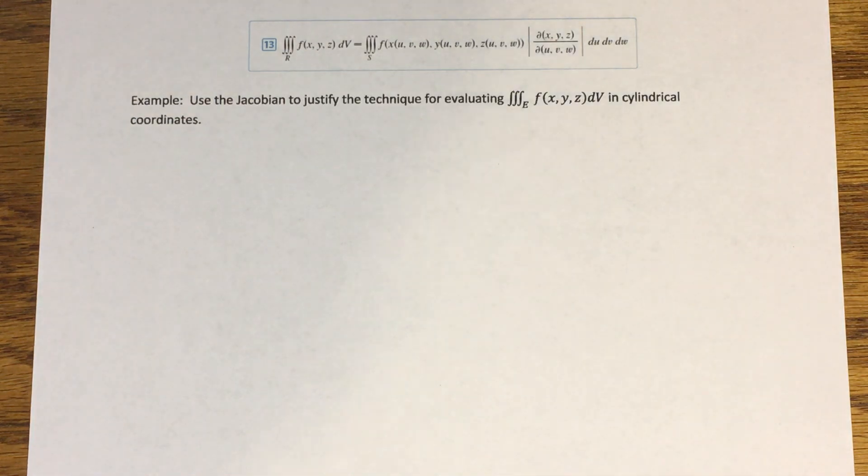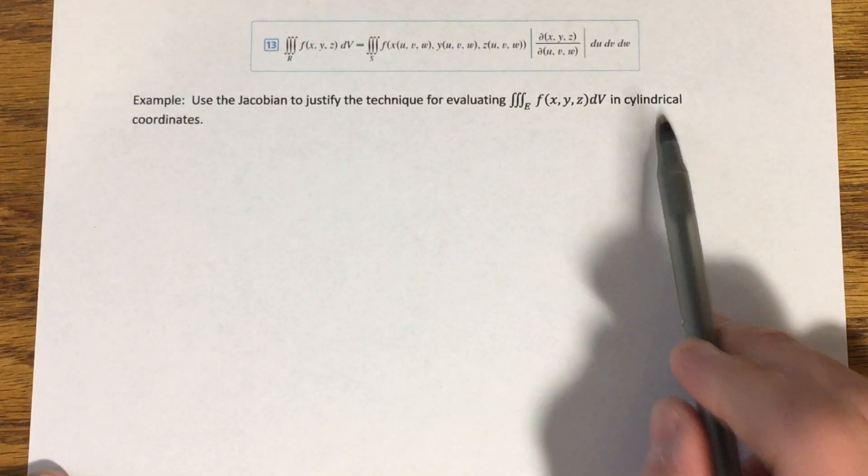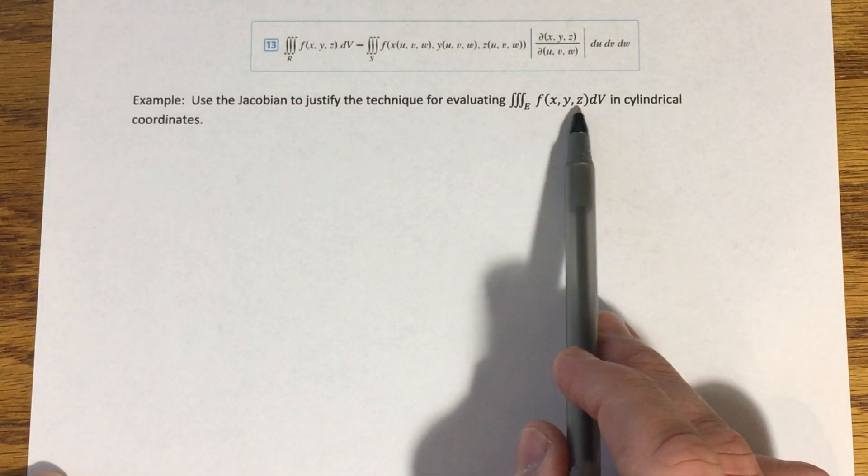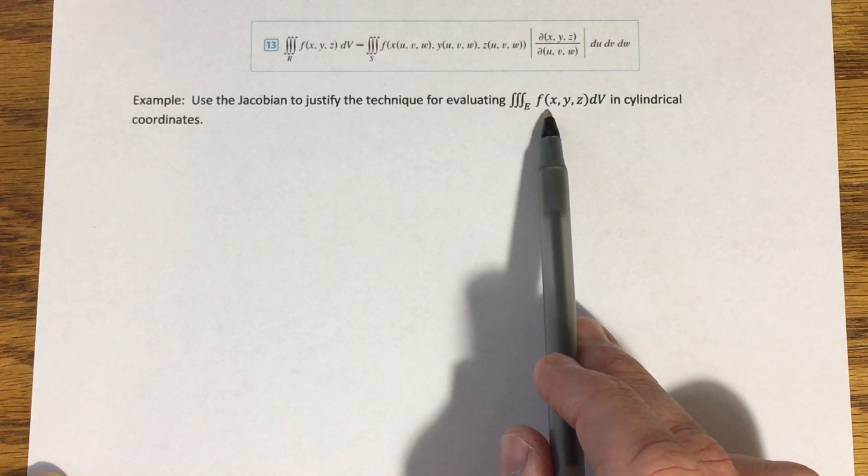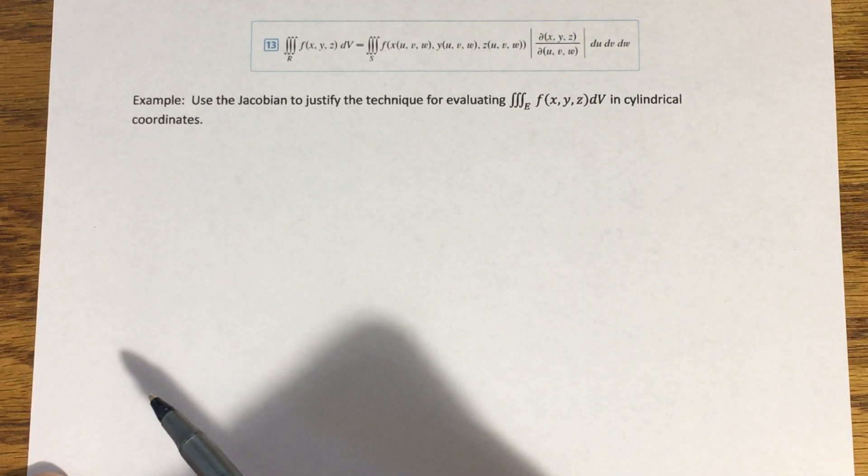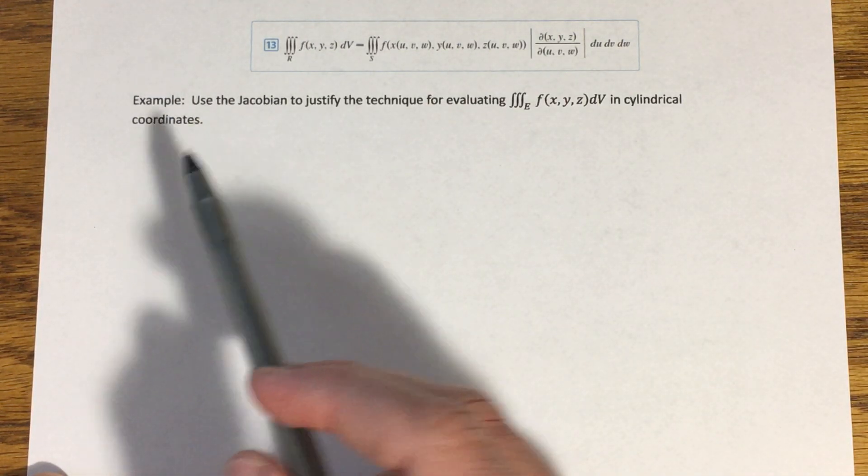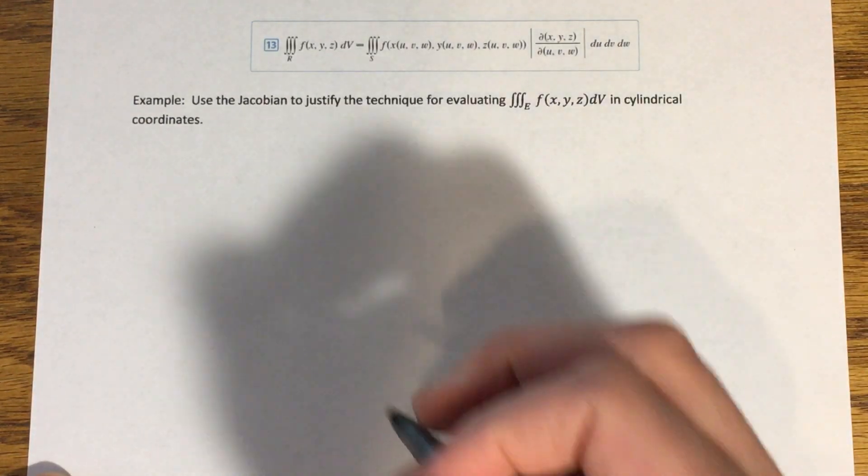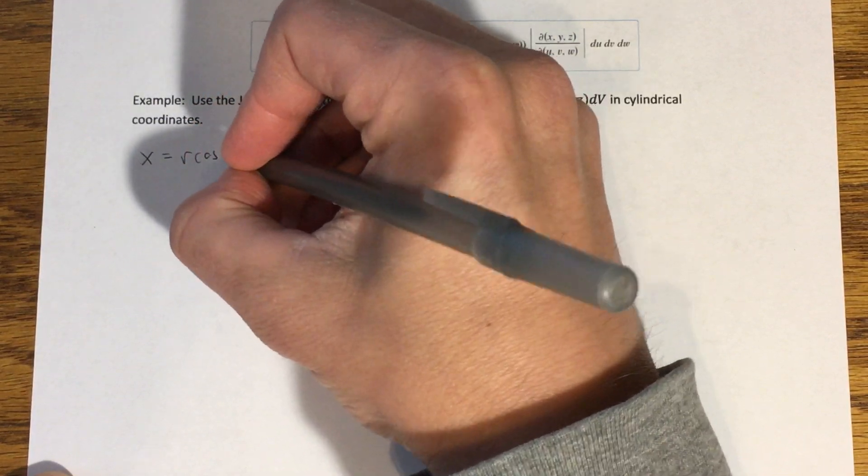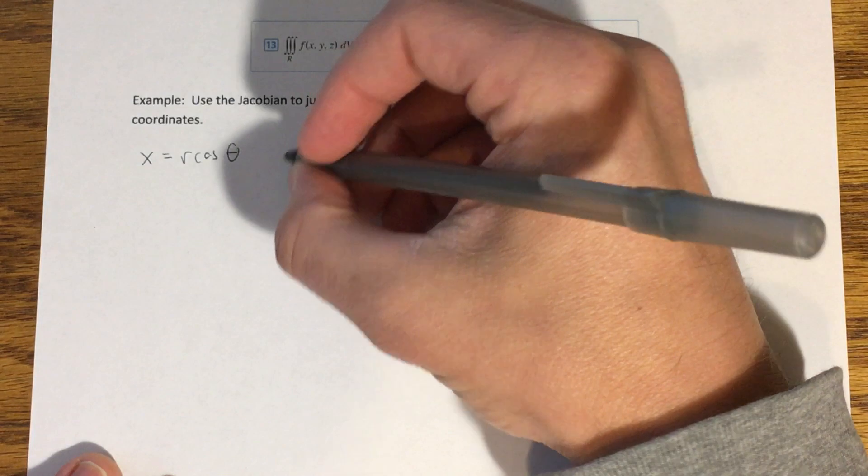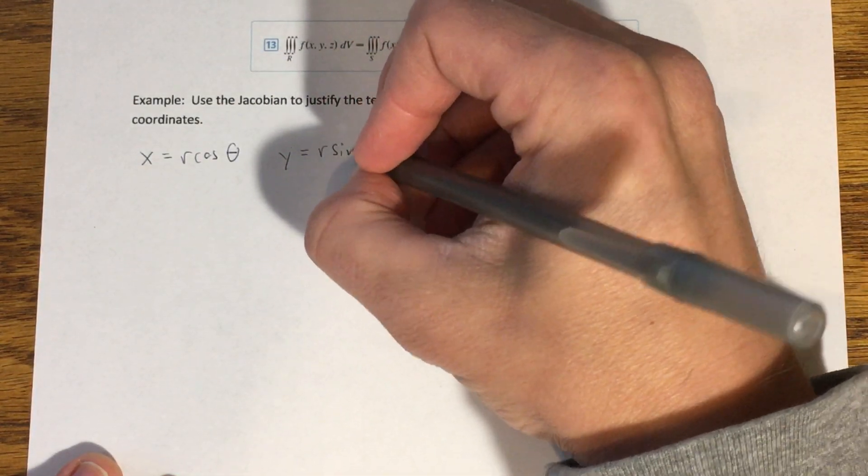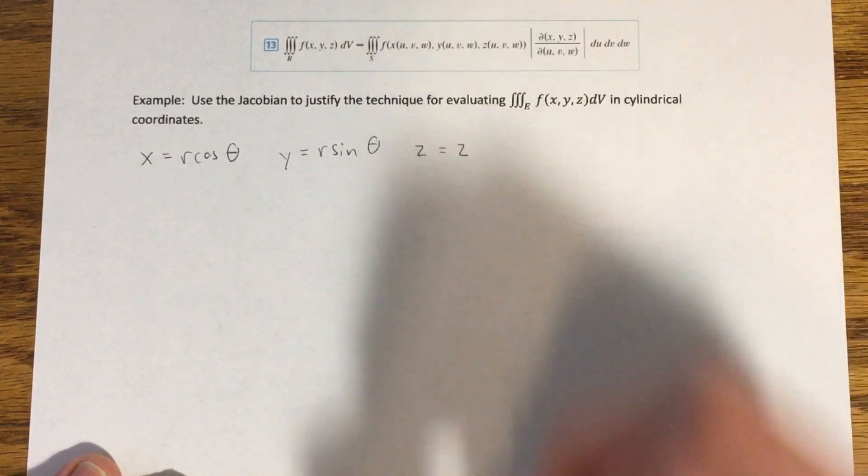So again, in order to start, notice we're not working with an explicit function here. It's just some general f of x, y, z. And I want to know what the conversion formulas from cylindrical into rectangular look like. So we know that they look mostly like polar coordinates. x is equal to r cosine of theta, y is equal to r sine of theta, and then z is just equal to z in cylindrical.